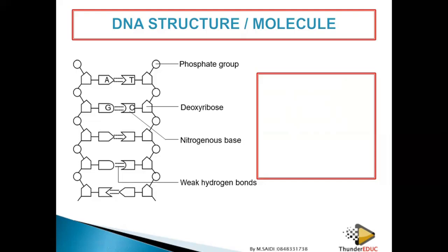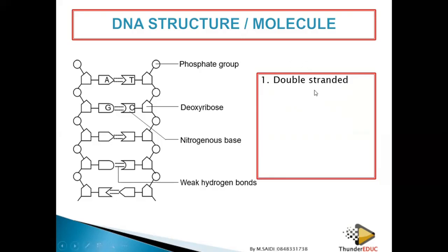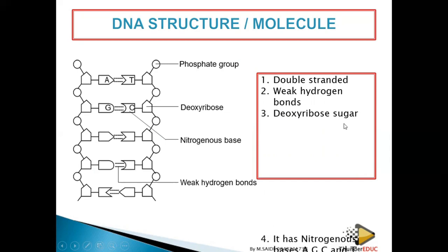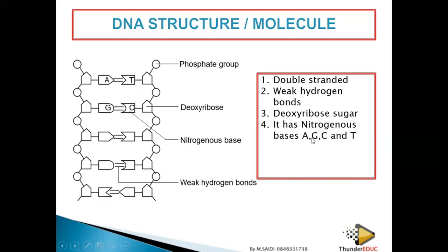We will see more questions when we wrap up this topic so you know exactly how to answer them. DNA is a double-stranded molecule with weak hydrogen bonds. It has deoxyribose sugar and nitrogenous bases that are complementary to each other — adenine with thymine, guanine with cytosine. DNA forms a double helix, meaning it is double-stranded.